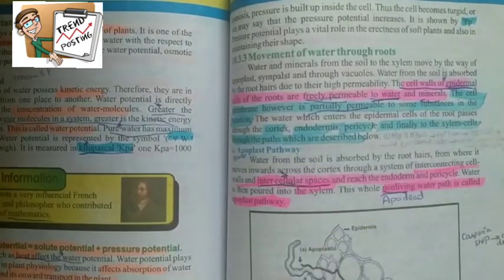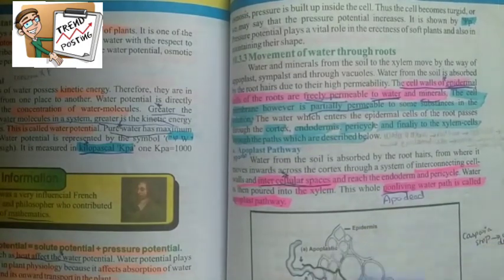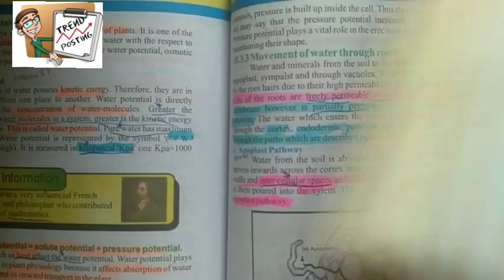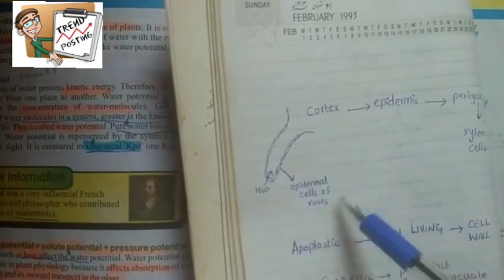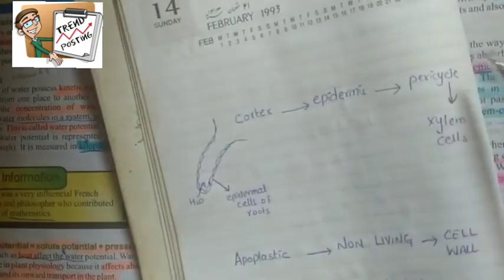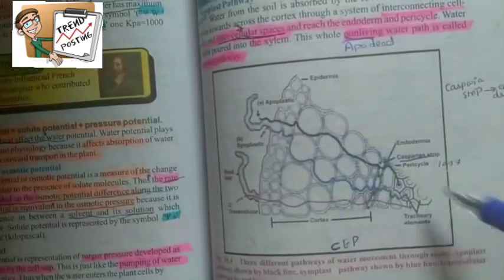You should know which pathways water takes and the differences between these pathways. Water is absorbed by epidermal cells of the roots, then moves through cortex, epidermis, pericycle, and finally to xylem cells.